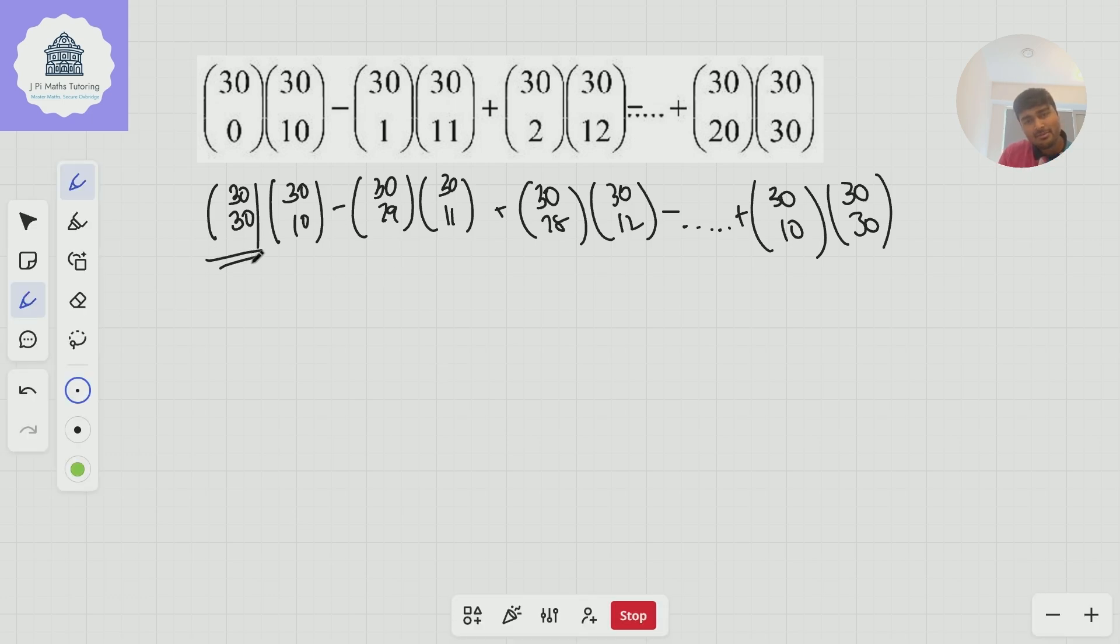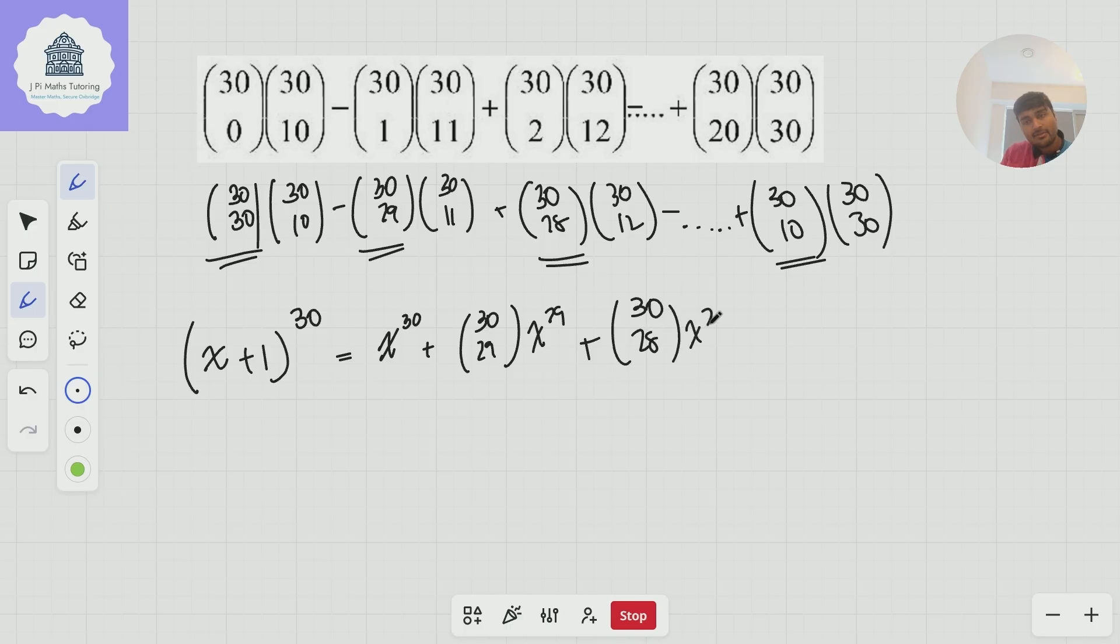If I look at the left numbers, each 30 choose 30, 30 choose 29, 30 choose 28, 30 choose 10, how could I get those? What I could do is I could think about the function x plus 1 to the power of 30. Because if I was to expand that, I'd get x to the power of 30, plus 30 choose 29, x to the power of 29, plus 30 choose 28, x to the power of 28, and so on, all the way down to, I'd have a 30 choose 10, x to the 10, and then the terms would continue thereafter up to 30 choose 0, x to the 0.